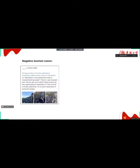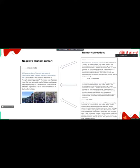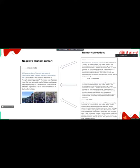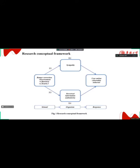As you know, negative rumors damage the destination image and tourist experience. We aim to compare how rumor correction sources affect user online citizenship behavior, with perceived information authenticity and subsistence as mediating links. This is the conceptual framework for our research.